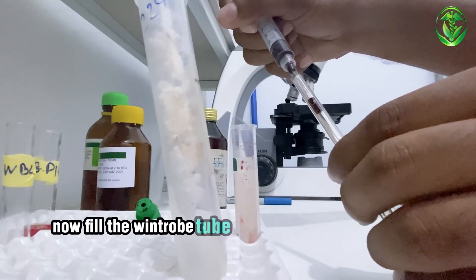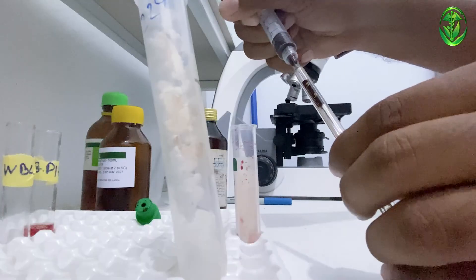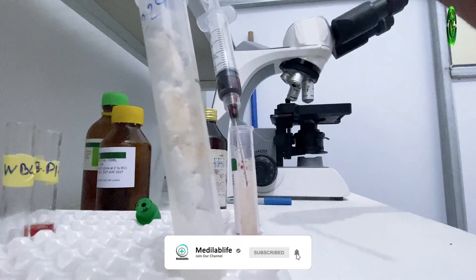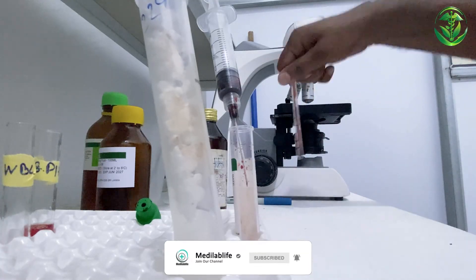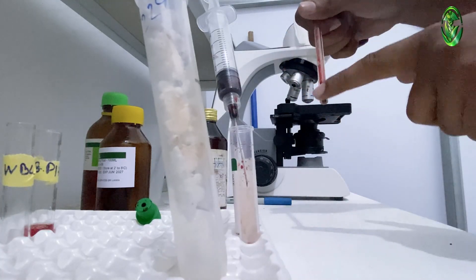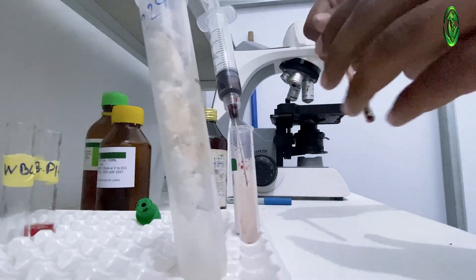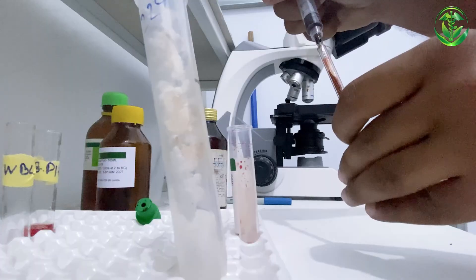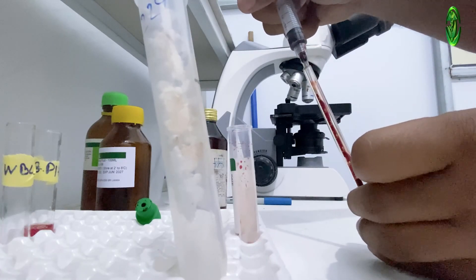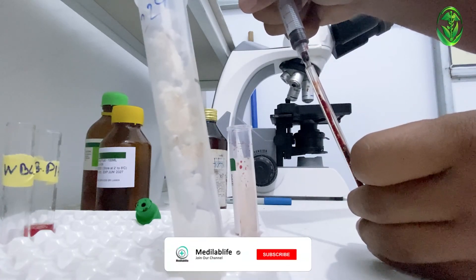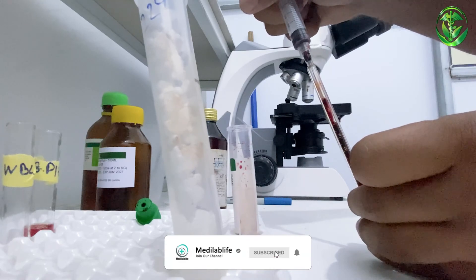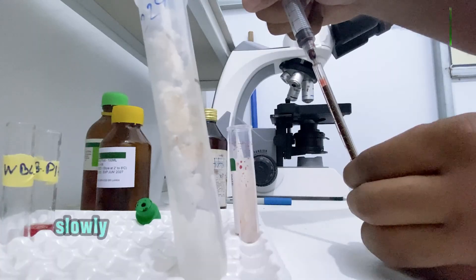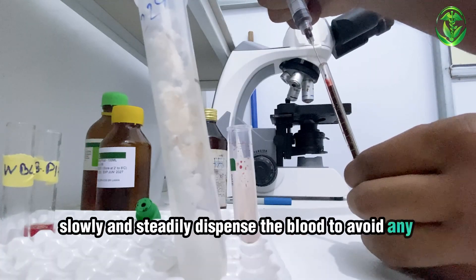Now, fill the Wintrobe tube with the blood sample from the syringe. Slowly and steadily dispense the blood to avoid any spillage.